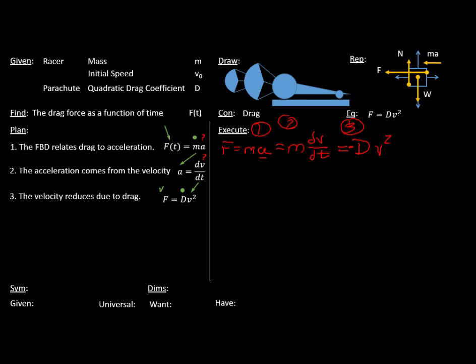Let's see. What do we do with this? Well, we'd probably like to do separation of variables, so that we get dv over v squared on one side, and have that equal to minus D over m times dt on the other side, so that's our separation of variables.